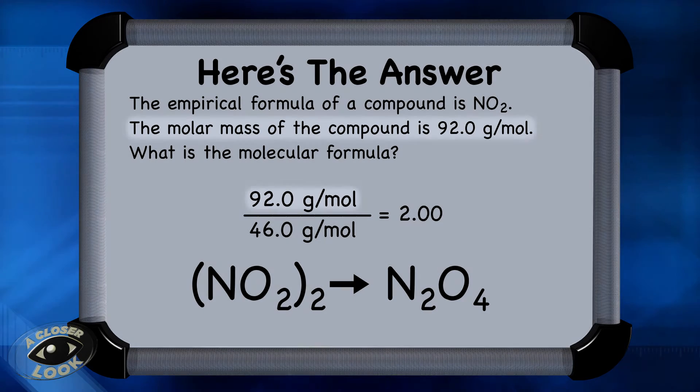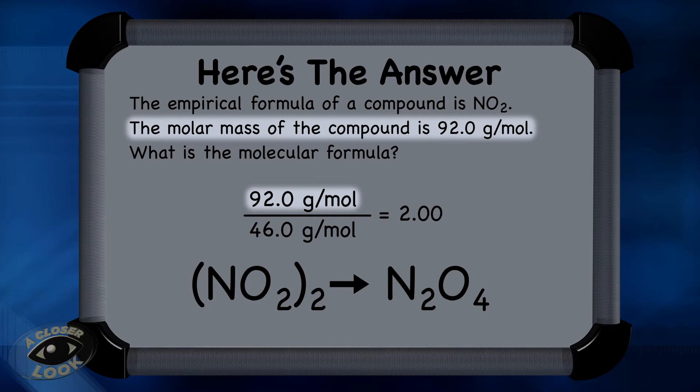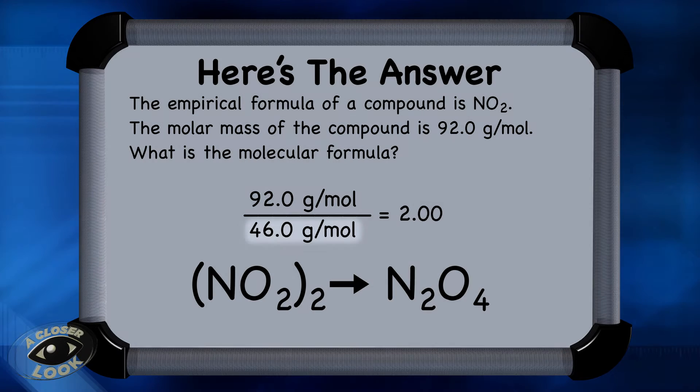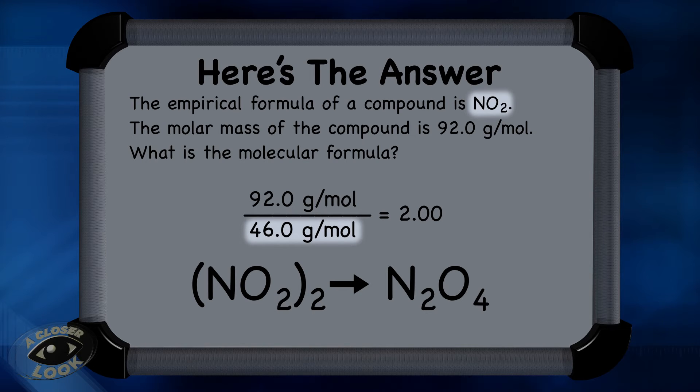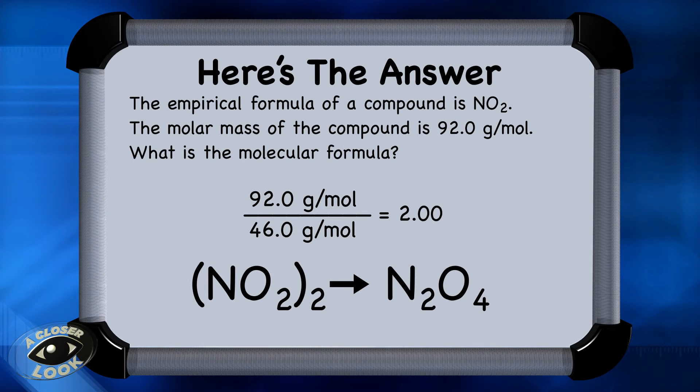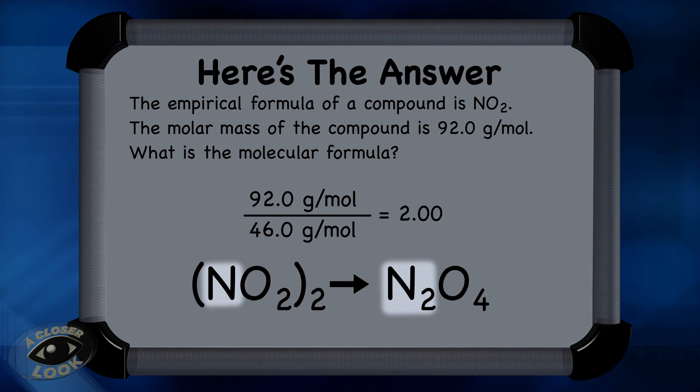The process was to take the molar mass that was given in the problem, 92.0, and divide that by 46, which was simply the mass of nitrogen dioxide, NO2. And you get an integer of 2. Take that 2 and distribute it to all the subscripts inside the empirical formula. So the 2 gets distributed to the nitrogen. That's how we got the N2. And then the 2 distributed to the 2 from oxygen ends up being 2 times 2, or 4, for oxygen. And N2O4 is the molecular formula for this compound.